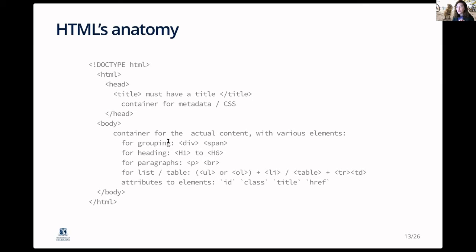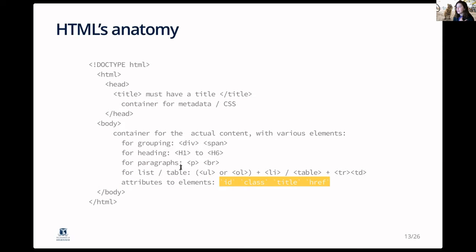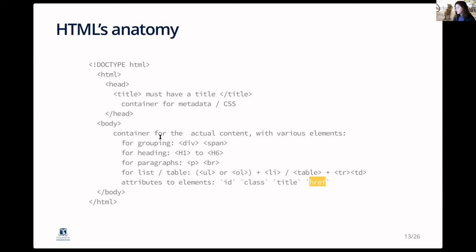The body has various elements used to display and structure content. You can group information using elements such as div or span, use headings, paragraphs, tables, as well as attributes included in all those elements. I want to flag that the href attribute is specifically used to provide internet links — so on a webpage, if you see a link, you'll typically have that attribute.